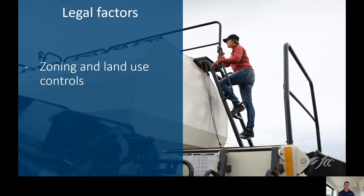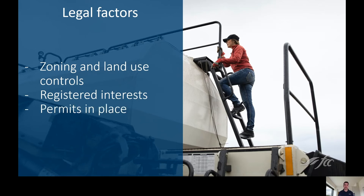Are there any registered easements or interests on the property that might impact the property's rights and value? This could be a conservation easement or maybe a right-of-way district use. Finding out if the proper permits are in place, such as permits for confined livestock operations or for water use for irrigation systems. Some sources for this information would be the local municipal or county office, the planning district, the zoning bylaws, and of course the property title.